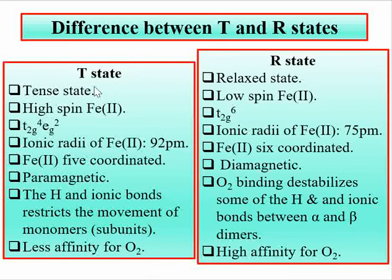In summary, the T state is deoxy-hemoglobin with less affinity for oxygen, while the R state is oxy-hemoglobin with high affinity for oxygen. This covers the key differences between the T and R states of hemoglobin.